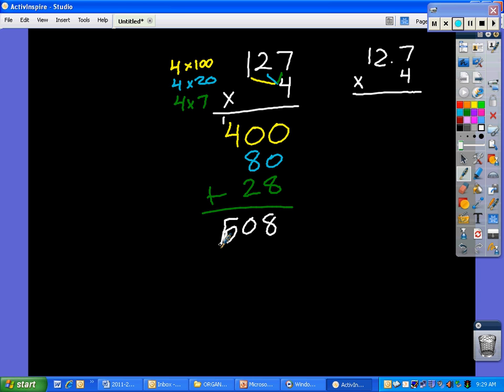And we get a 5 for 508. All right, so that's without a decimal. Here's how to do it with a decimal.